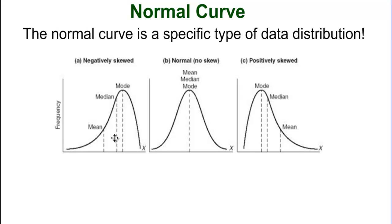The distribution on the left is a negatively skewed distribution, or a distribution that is skewed to the left. On the right side, you see a distribution that is skewed to the right. It is possible that a data distribution follows one of these three distributions, but it's also possible that they do not follow any specific distribution at all.